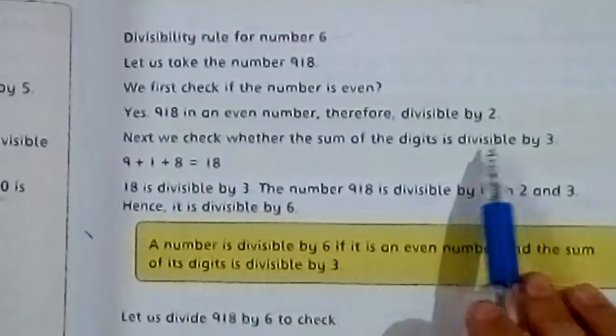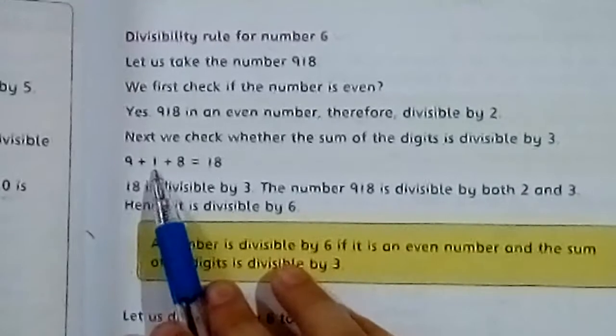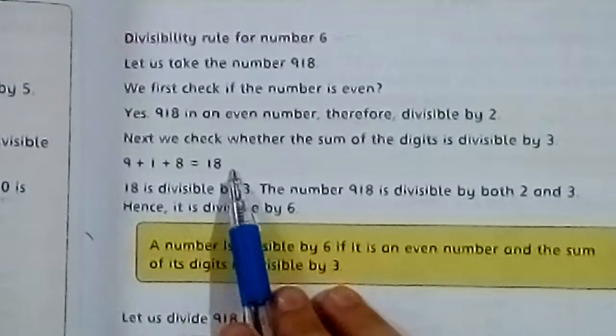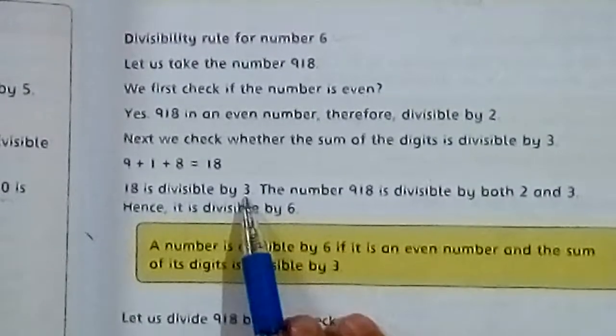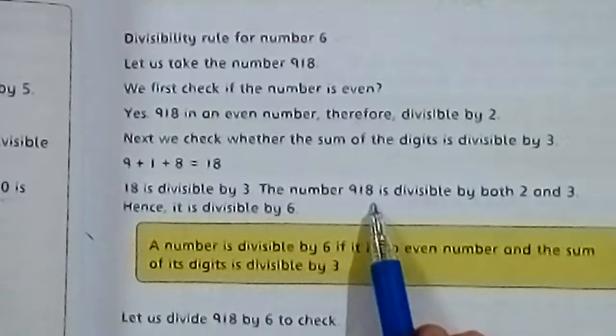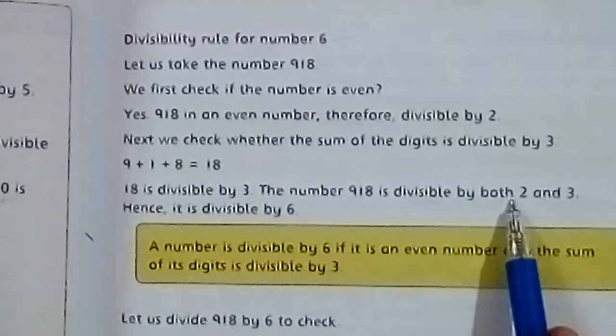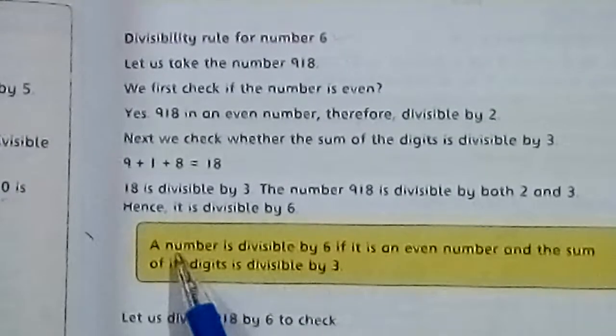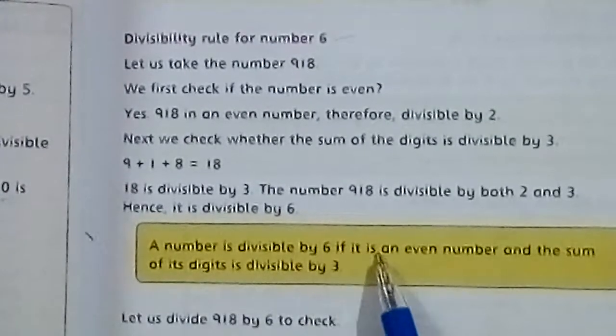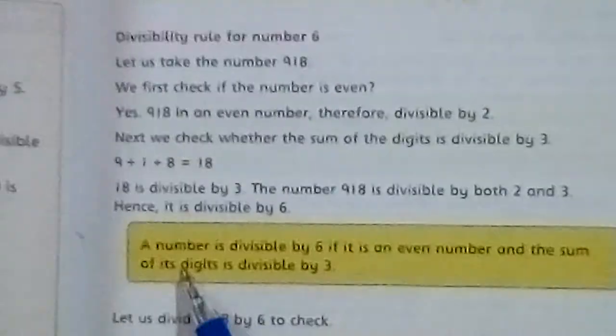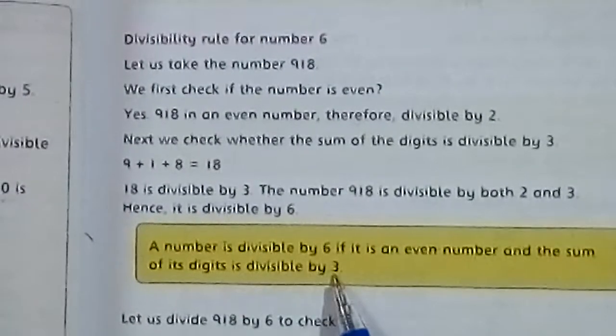we check whether the sum of the digits is divisible by 3. 9 plus 1 plus 8 equals 18. 18 is divisible by 3. The number 918 is divisible by both 2 and 3. Hence, it is divisible by 6. A number is divisible by 6 if it is an even number and the sum of its digits is divisible by 3.